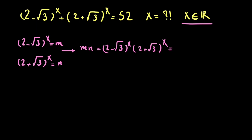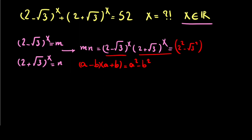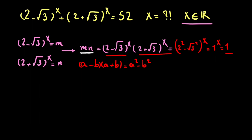Let me write something for you. You know that if you have (a minus b) times (a plus b), the answer will be equal to a squared minus b squared. So this will be equal to (2 squared minus the square root of 3 squared) to the power of x, which equals 1 to the power of x, and of course that equals 1. So it means m times n equals 1.